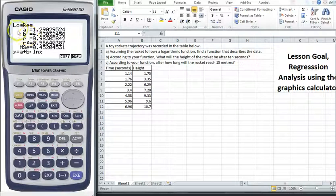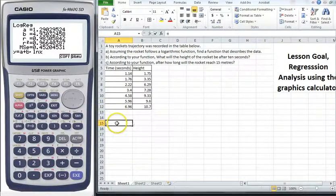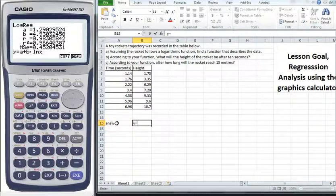So you can see that it gives us a logarithmic curve, gives us an r squared value and all the rest of it. But more importantly, it gives us a logarithmic curve of y equals a plus b times ln(x), and our a value is 1.29029524, and our b value is 4.9303. So our answer to question a is y equals 1.29029 plus 4.9303 ln(x). So there's our answer to part A.